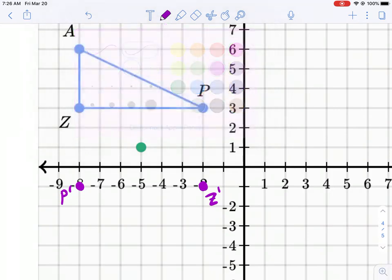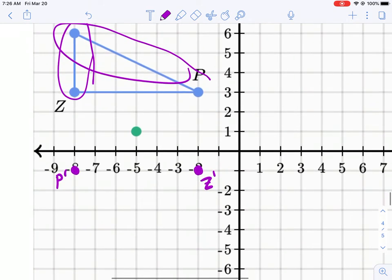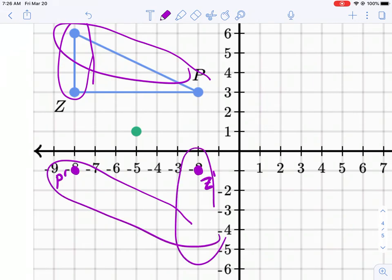But what I'm going to do is I'm just going to visualize and see what is the relationship between Z and A and A and P. So we see that P and A are diagonal from each other. And Z and A are vertical from each other.